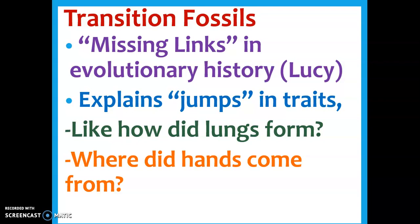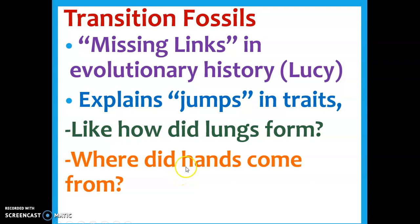What would half an arm look like? What would half a leg look like? How is that beneficial? Other examples: lungs — how do you go from gills to lungs, what would the in-between have looked like? And hands — how do we get hands out of flippers if we really came from fish? This was a tough question for Darwin to answer.